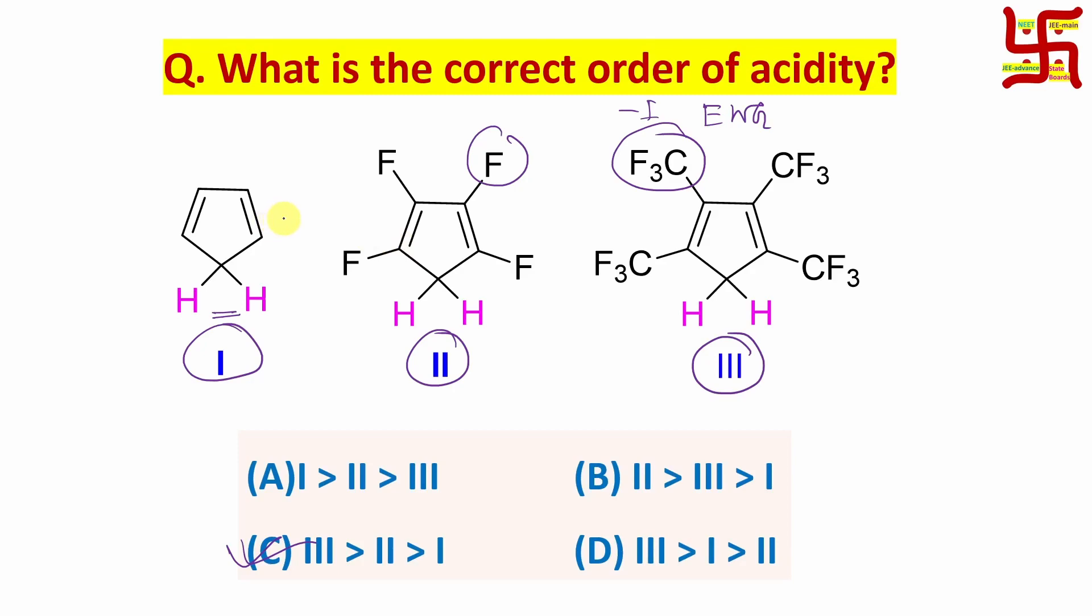So that could be encountered by the introduction of electron-withdrawing group. So your answer will be: sir, option A will be least acidic, agree? So which option? So option B and option C.